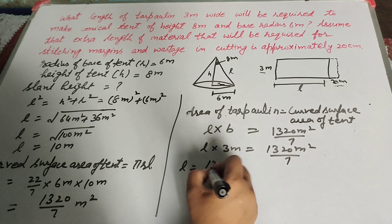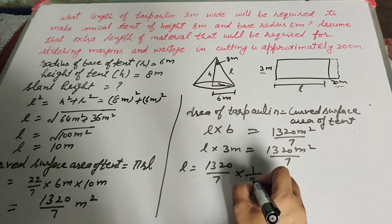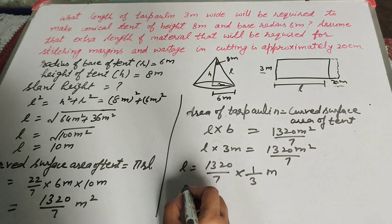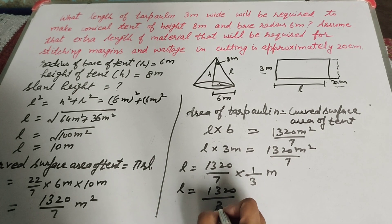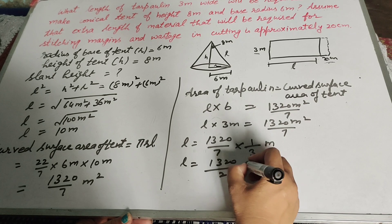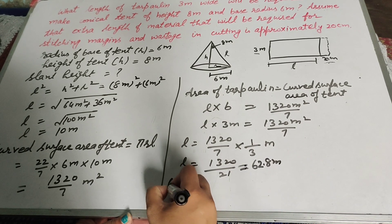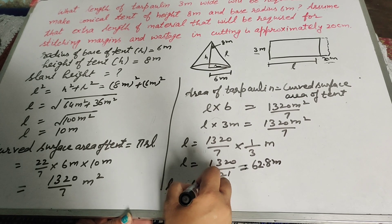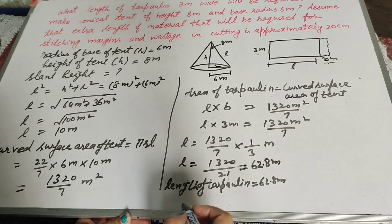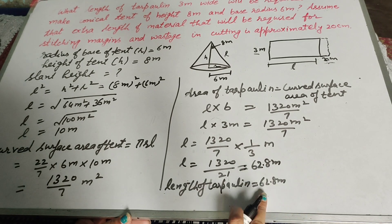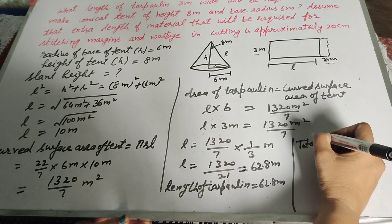Transposing 3 to the right hand side, l equals 1320 over 7 divided by 3, which equals 1320 divided by 21. On dividing, we get the answer 62.8 meter. So the length of the tarpaulin equals 62.8 meter.